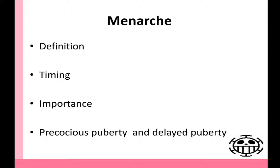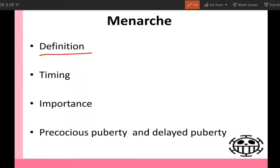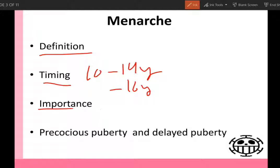The first item we should ask about is menarche. What is menarche? Menarche is the first menstrual flow. Timing of menarche is from 10 to 14 years without secondary sex characters, and up to 16 years with secondary sex characters. It's very important to ask about menarche because some diseases can affect it. For example, diabetes mellitus, obesity, and epilepsy can accelerate menarche, while premature ovarian failure or hyperandrogenism causes delayed menarche.